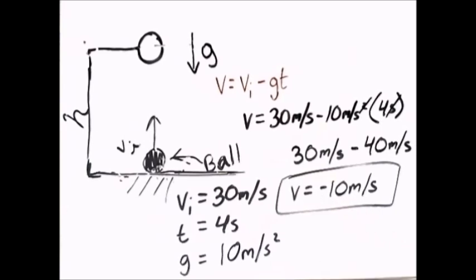The negative sign means the ball is now going in a downward direction — it's heading back to the ground rather than going up. So it's safe to assume that at some point the velocity of the ball was zero meters per second, which corresponds to its maximum height.